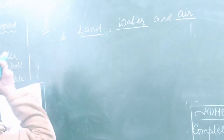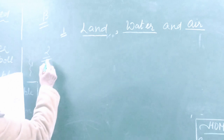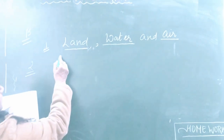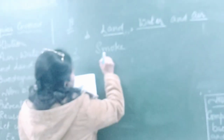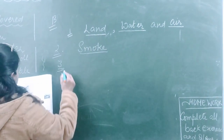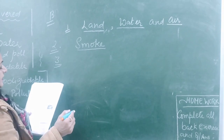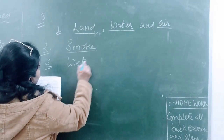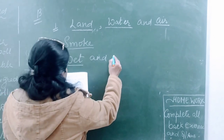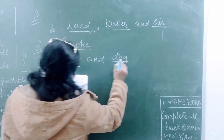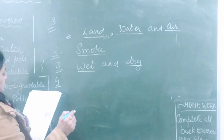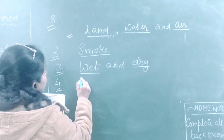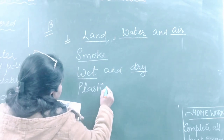Third blank: dash waste and dash waste should be disposed of separately. What comes here? First one is wet and second one is dry. Write down wet and dry. Fourth blank: dash bags stop the flow of water in the drains. Plastic bags — write plastic bags.